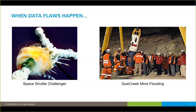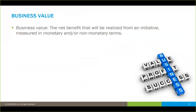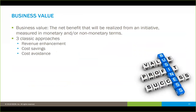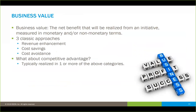To convince business leaders, we need to tie data quality and data governance into true business value, defined as the benefit realized from an initiative measured in monetary or non-monetary terms. There are three basic approaches: revenue enhancement, cost savings, and cost avoidance. Competitive advantage can generally be tied back into one or more of these three quantifiable categories.